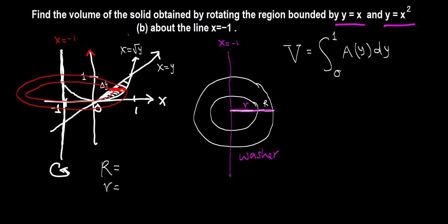From the axis of rotation at x equals negative 1 to the y-axis, the distance is always 1. To reach the outer curve x equals root y, the outer radius R is 1 plus root y. For the inner curve x equals y, the inner radius r is 1 plus y.